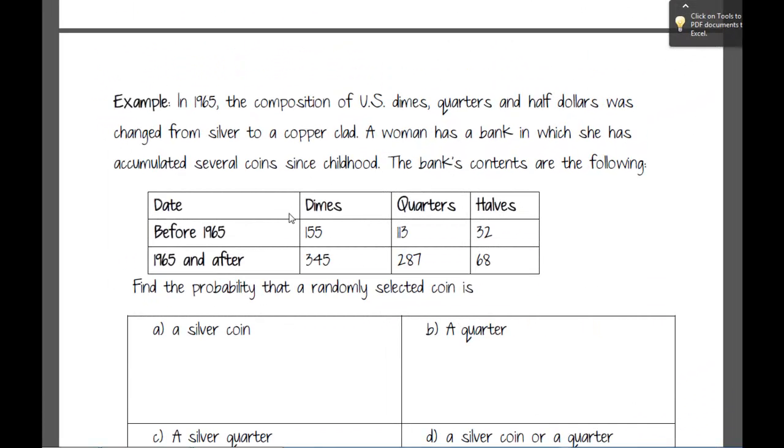We'll just take a look at this quickly as a kind of review of what we're talking about. I want to look at this because I think I mentioned contingency tables earlier, but here they are again. It says in 1965 the composition of U.S. dimes, quarters, and half dollars was changed from silver to a copper clad. A woman has a bank in which she has accumulated several coins since childhood. The bank's contents are the following.